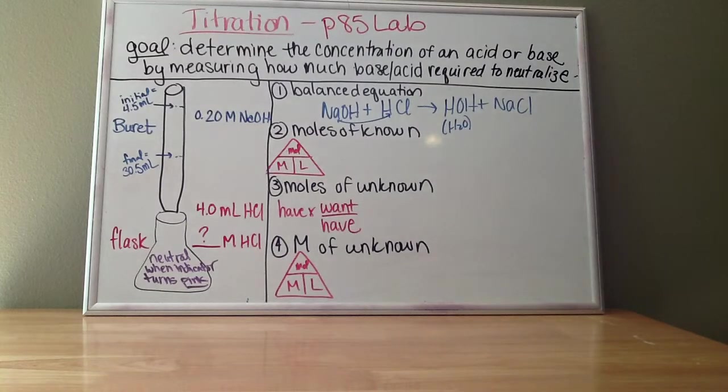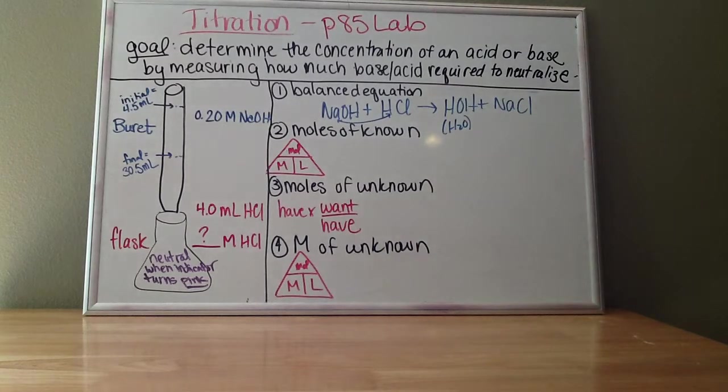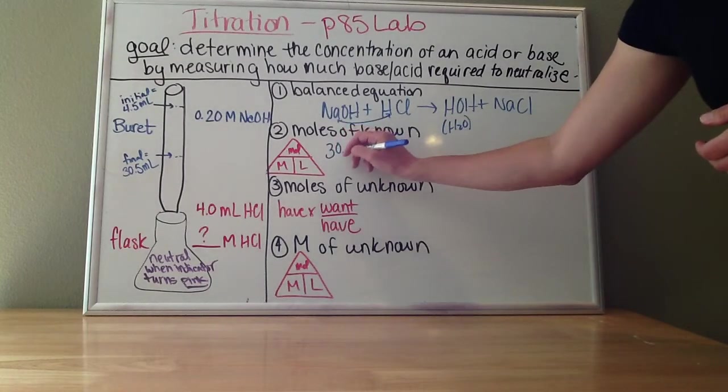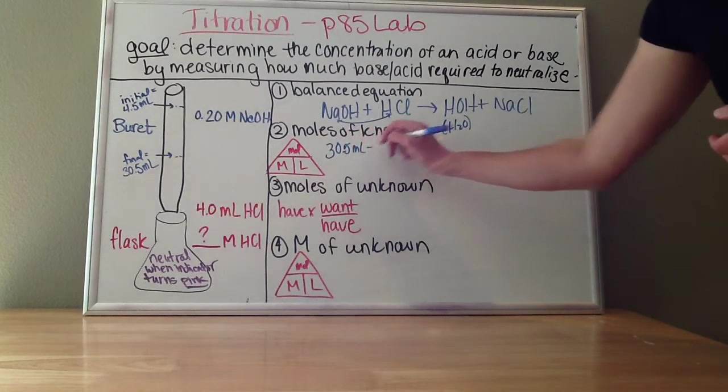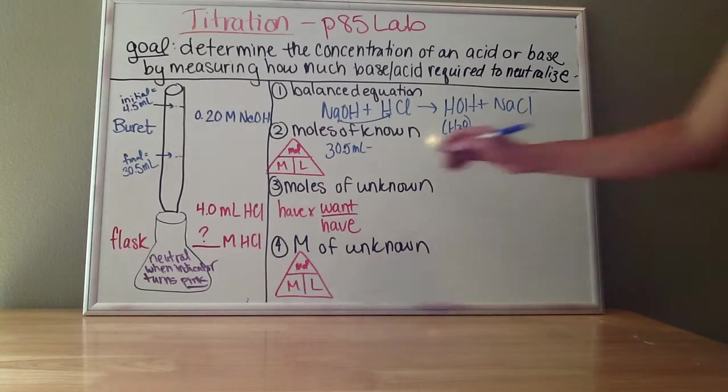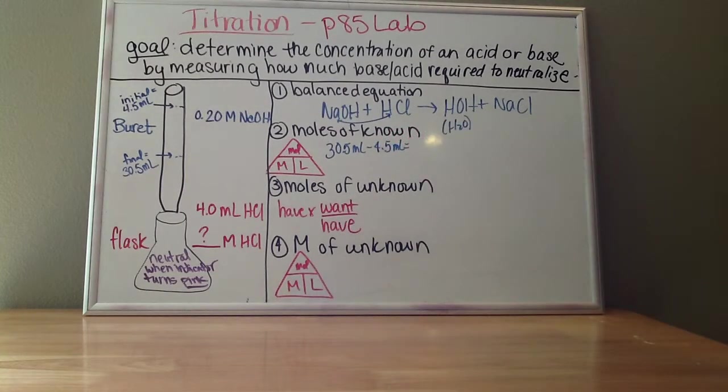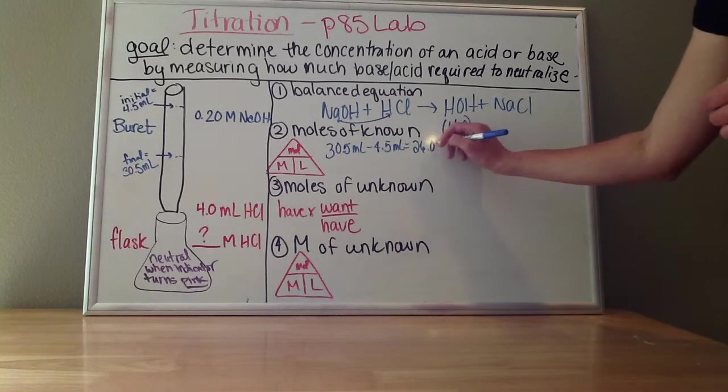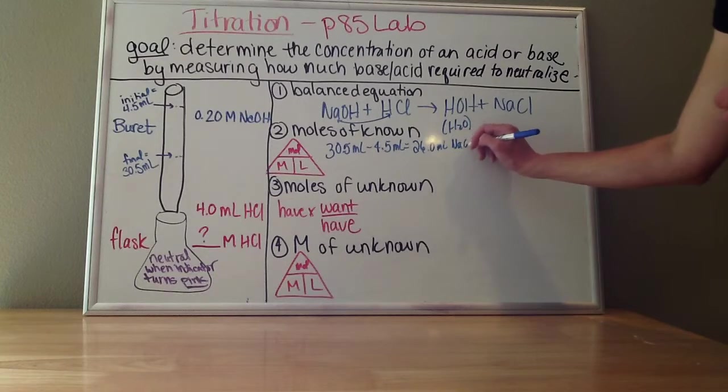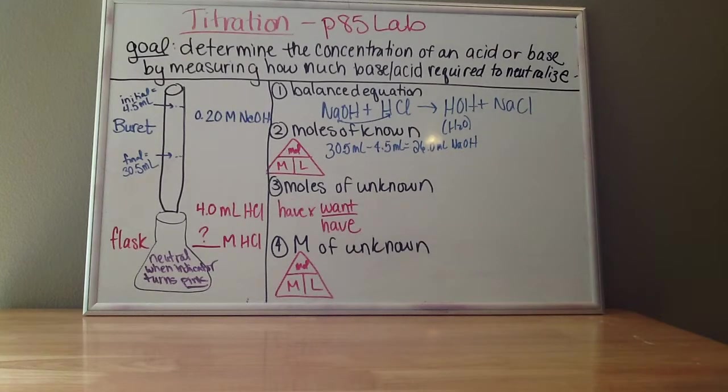So first I have to do a little bit of subtracting to figure out how much base I actually used. My final volume of base was 30.5 milliliters, my initial volume of base was 4.5 milliliters. So what that means is I used 26 milliliters of base to neutralize my sample. I know the concentration of the base is 0.2 molar. So to find moles,